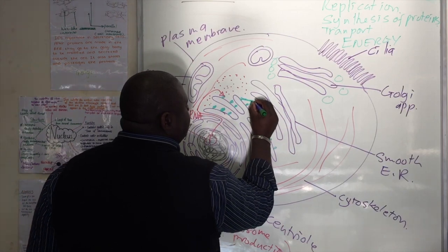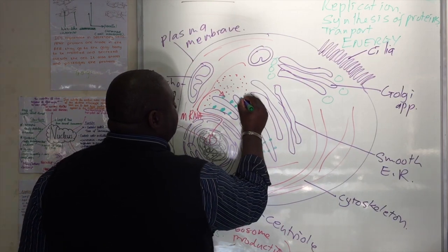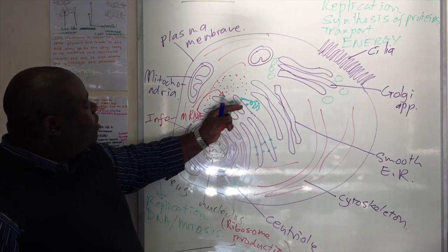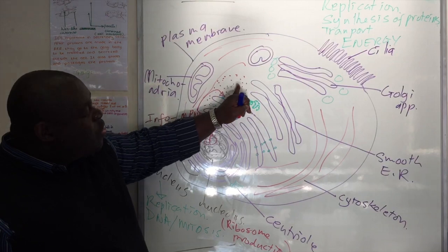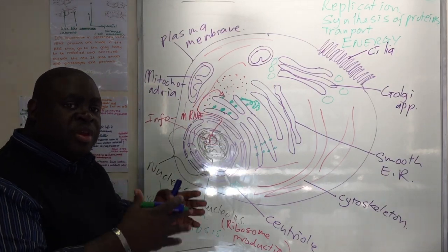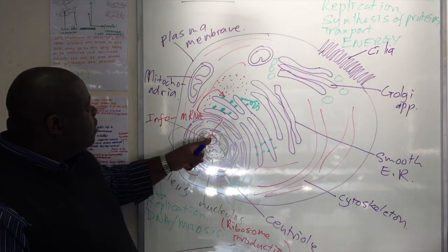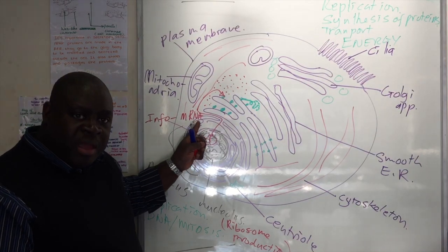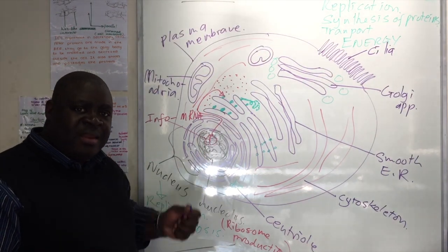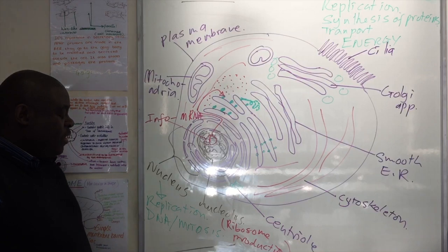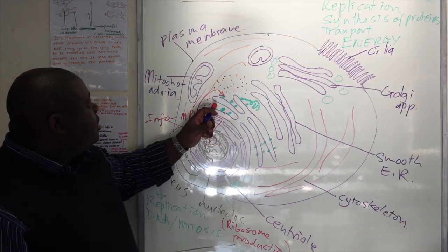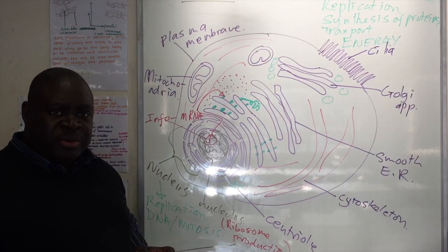So this protein came from the joining up of all these separate amino acids in a specific sequence, using information from the mRNA, which was copied from the DNA in the nucleus. How many organelles have we mentioned so far? The nucleus and the ribosome.